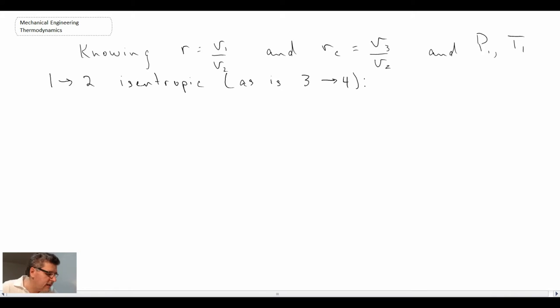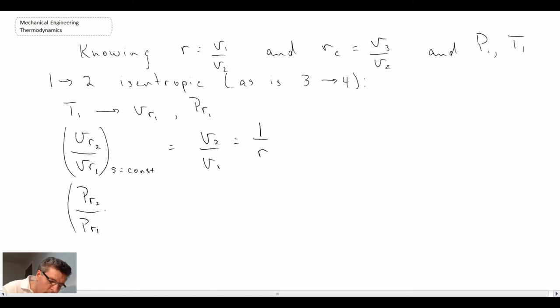And the place where we can take advantage of that is we can use the relative pressure and relative specific volume in the tables in the back of the book. And so if we know T1, we can get the relative specific volume at that point as well as the relative pressure. And from that we can use these relationships, the relative volume and relative pressure as shown there.